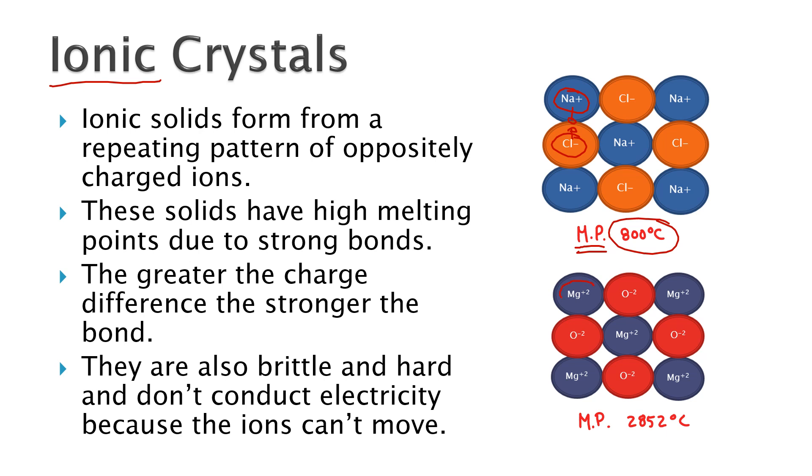If the charge is greater, the amount of energy is going to be more as well. So the melting point for magnesium oxide here, which has a plus two and a minus two charge, is a lot higher than for the table salt due to that extra charge between those particles, those ions.